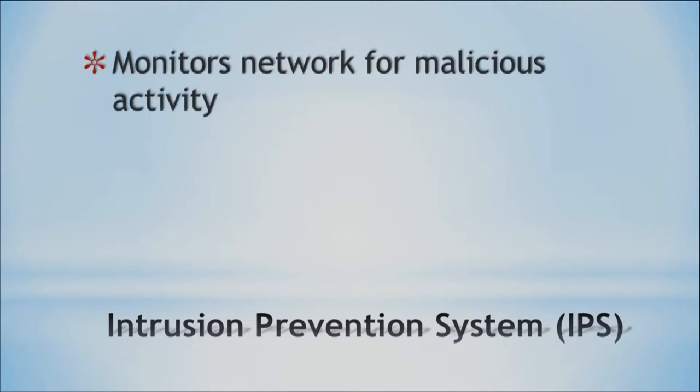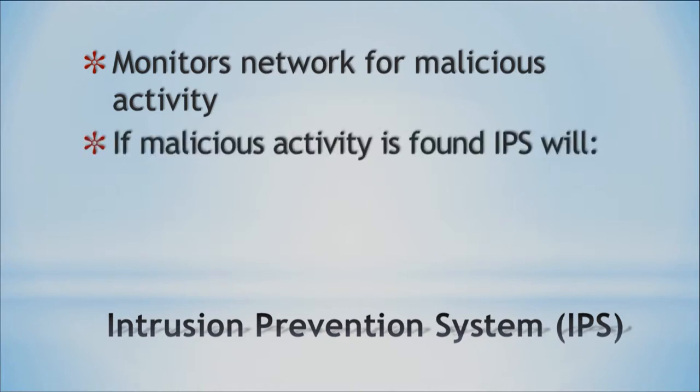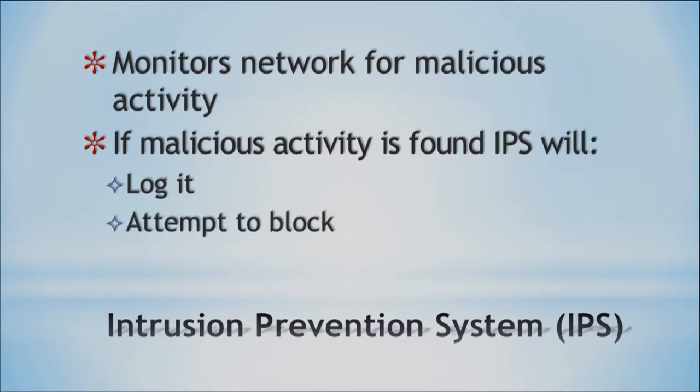Another device we have is the intrusion prevention system, abbreviated as IPS. This also monitors our network for malicious activity, but it's a little different from the intrusion detection system. With the IPS, if any malicious activity is found, it will log it, attempt to block it — that's where the prevention comes in — and then report it. So the IDS and IPS work with our firewall to add even more security. We don't rely on just one single device; we have multiple devices looking at all traffic coming and going.